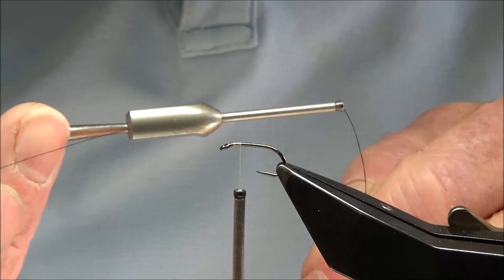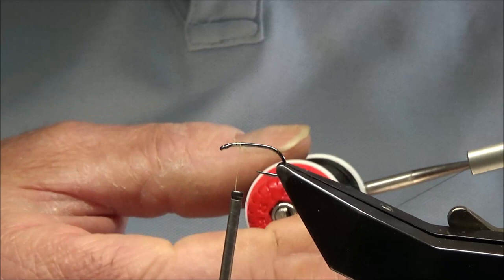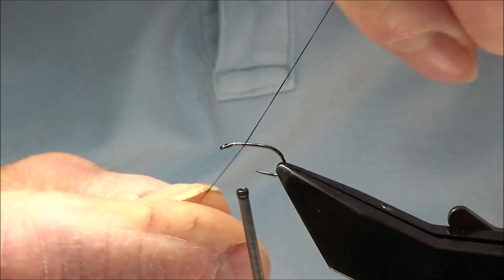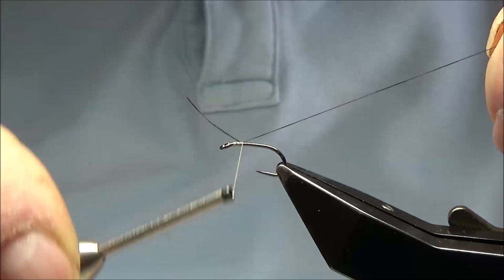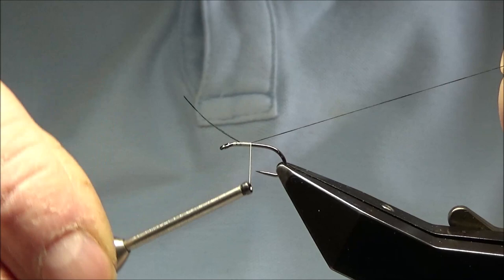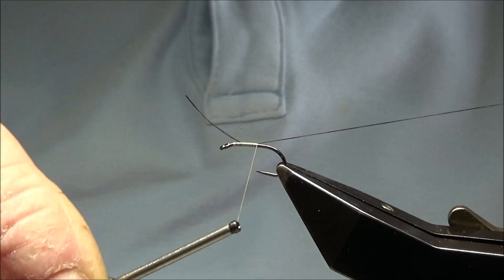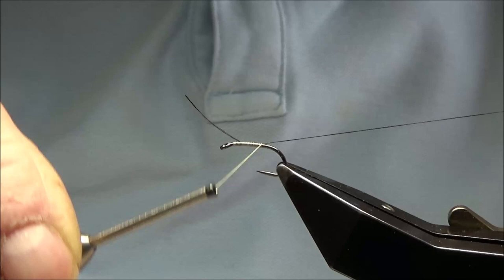The rib and the thorax is UTC70 in black. So I'm going to catch the UTC70 under the Lycar Hill. Wind it down in touching turns. If they're not quite touching you'll have to bear with me because I usually use a backboard for this, but obviously with the camera I can't use the backboard.